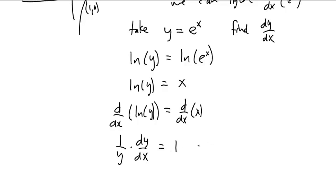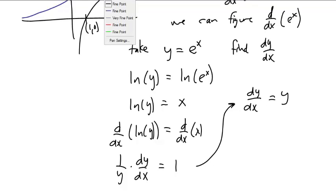Cross multiply the y over, and we get that dy dx is just y. What was y? Y was e to the x. Therefore, the derivative with respect to x of y is e to the x.